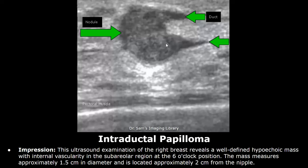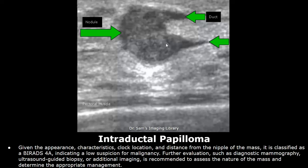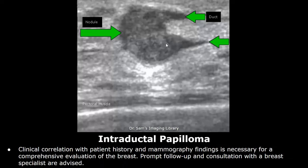You can write the main findings in the impression and also write its location and the size of the mass. Given the appearance, characteristics, clock location, and distance from the nipple, it is classified as BIRADS 4A, indicating a low suspicion for malignancy. Further evaluation, such as diagnostic mammography, ultrasound-guided biopsy, or additional imaging, is recommended to assess the nature of the mass and determine the appropriate management. After that, you can write about clinical correlation with patient history and mammography findings, and also refer the patient to a breast specialist.